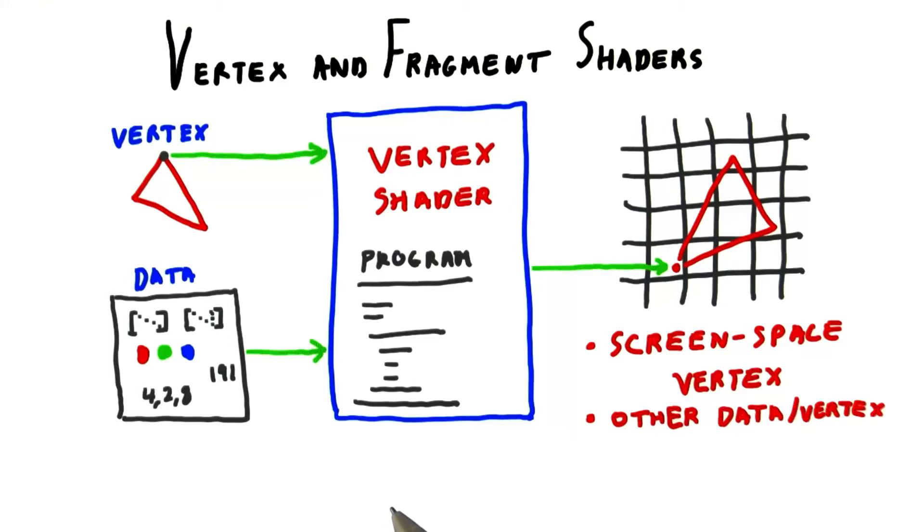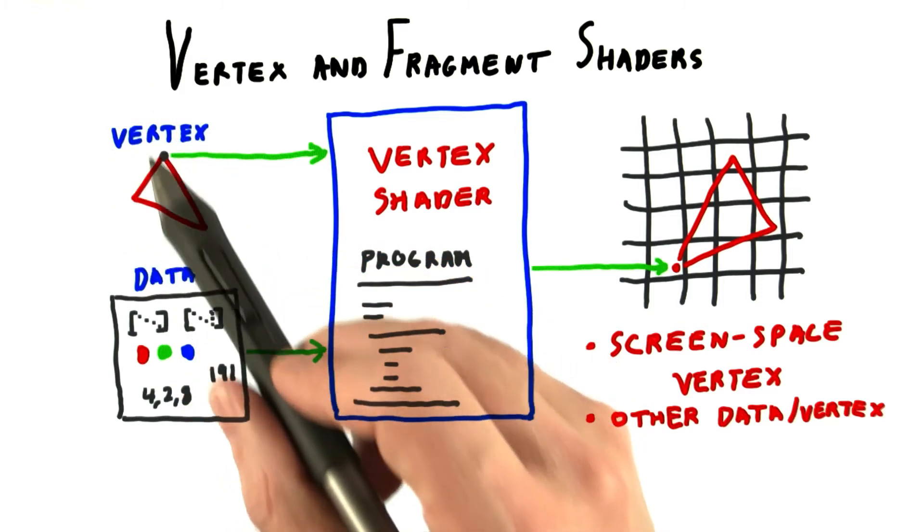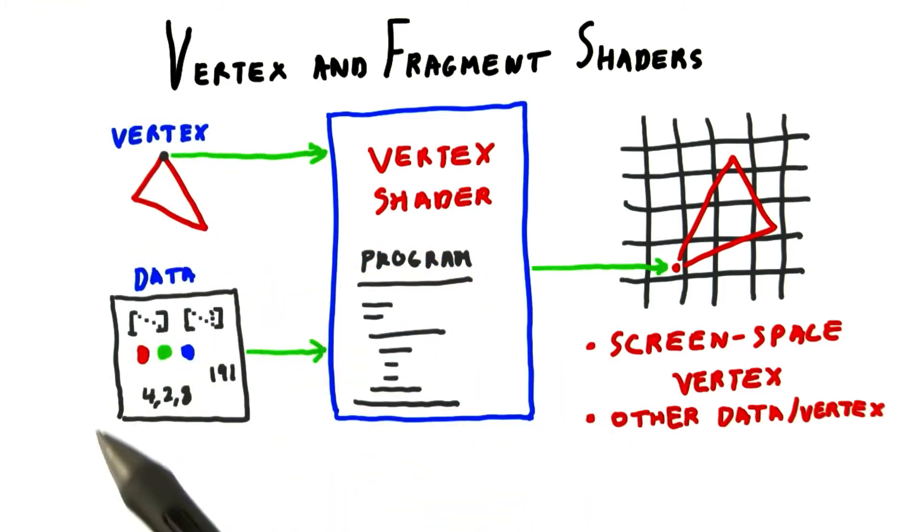The vertex shader performs the transform of the vertex position to the screen. Its inputs are a vertex from the triangle, along with whatever data the programmer wants to provide.